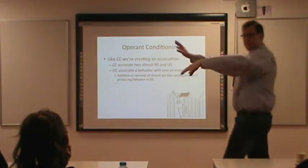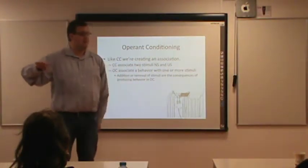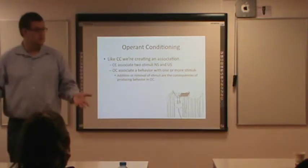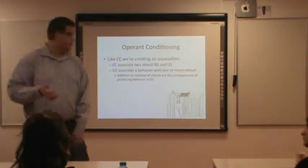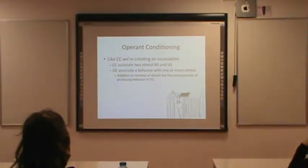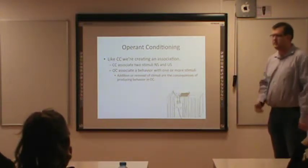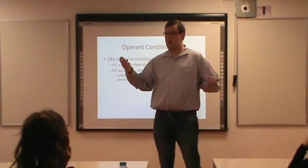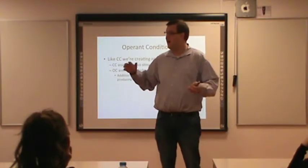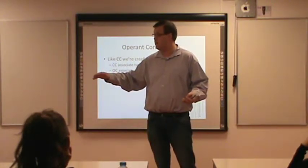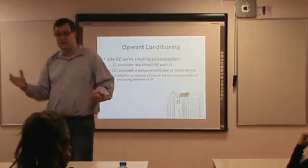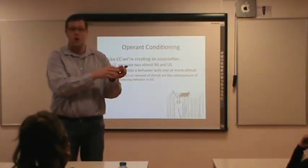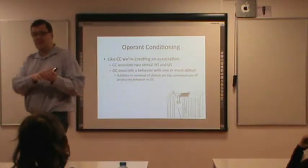In the example of fumbling around in the dark, we make the right behavior — press down in this place — and it produces some stimulus: light. So we're associating a behavior with a stimulus. We don't have to necessarily add a stimulus; we could take a stimulus away. If I want to go to sleep, I make some response that takes the stimulus away. In one situation the response leads to more of a stimulus; in the other, the response leads to less of the stimulus.